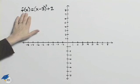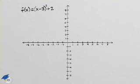We're asked to graph f(x) = (x - 3)² + 2, which is a parabola. We can do so by using translations.